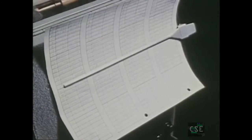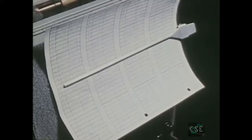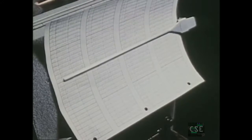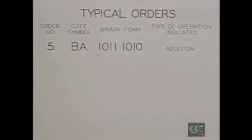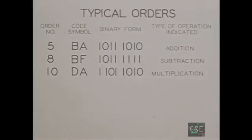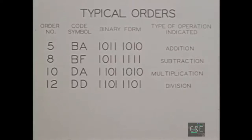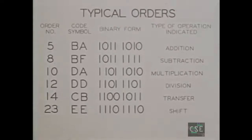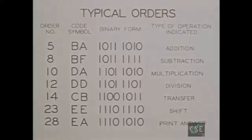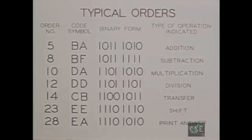A problem in its final coded form is a sequence of instructions. Each instruction is made up of an order and an address. An order is a command to the machine to perform a specific operation. In code, it is a combination of two letters in the range A through F. There are about 30 such combinations in use.